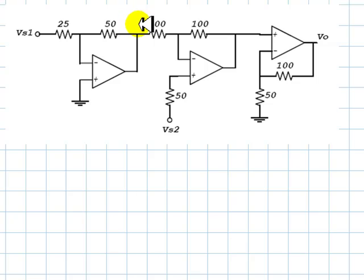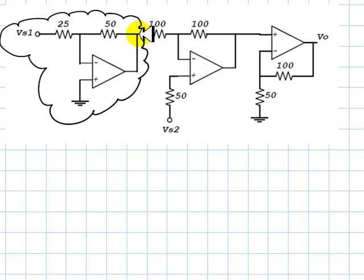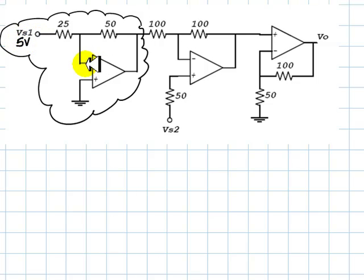We observe that this part of the circuit is actually an inverting amplifier, with a gain that is negative 50 divided by 25, that is negative 2. Whatever voltage we apply at Vs1 will be inverted and duplicated at the output of this amplifier. Let's assume that H and G are zero, so Vs1 is 5 volts. With a gain of negative 2, the voltage at the output of the first amplifier is negative 10 volts.